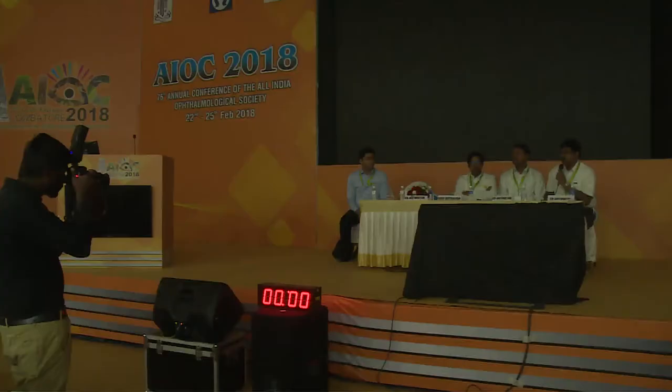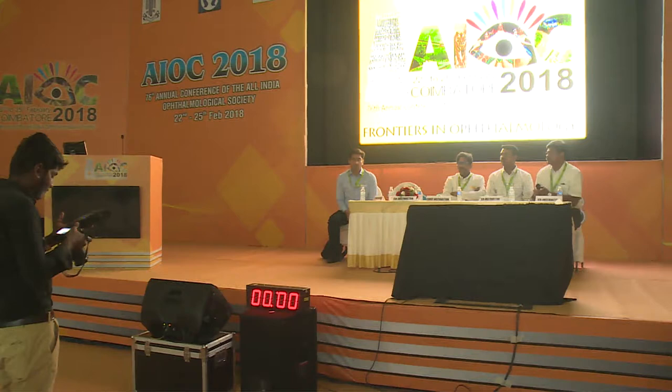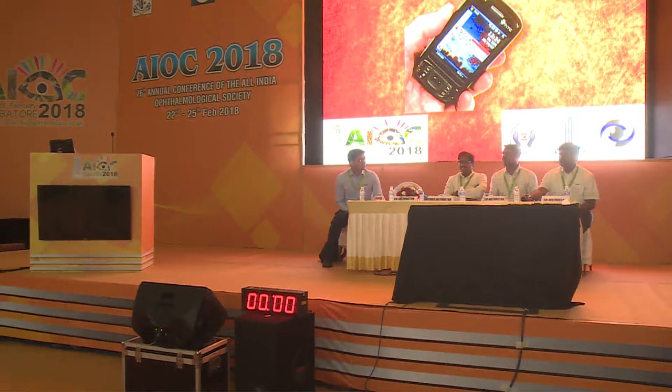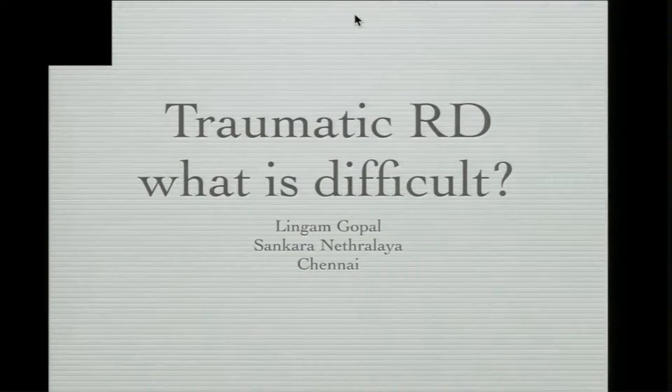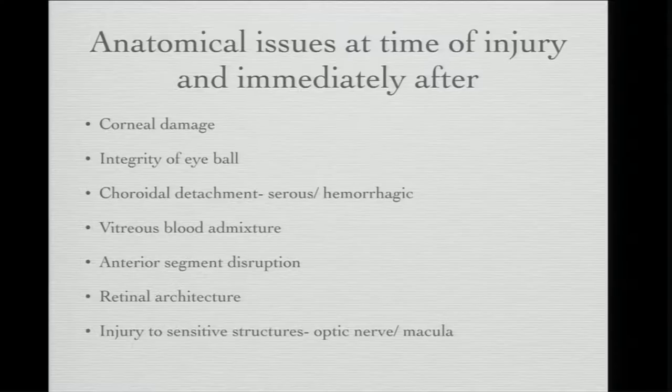Next, Dr. Gopal speaks on traumatic retinal detachment — what is difficult about managing it. He notes some flexibility in presentation as he focuses on what is challenging rather than a standard sequence. When discussing traumatic retinal detachment, the anatomical issues at the time of injury influence our decision-making: the amount of choroidal damage, globe integrity, presence of choroidal detachment — serous or hemorrhagic — vitreous-blood mixture, anterior segment disruption, retinal architecture damage, and injury to sensitive structures such as the optic nerve and macula.